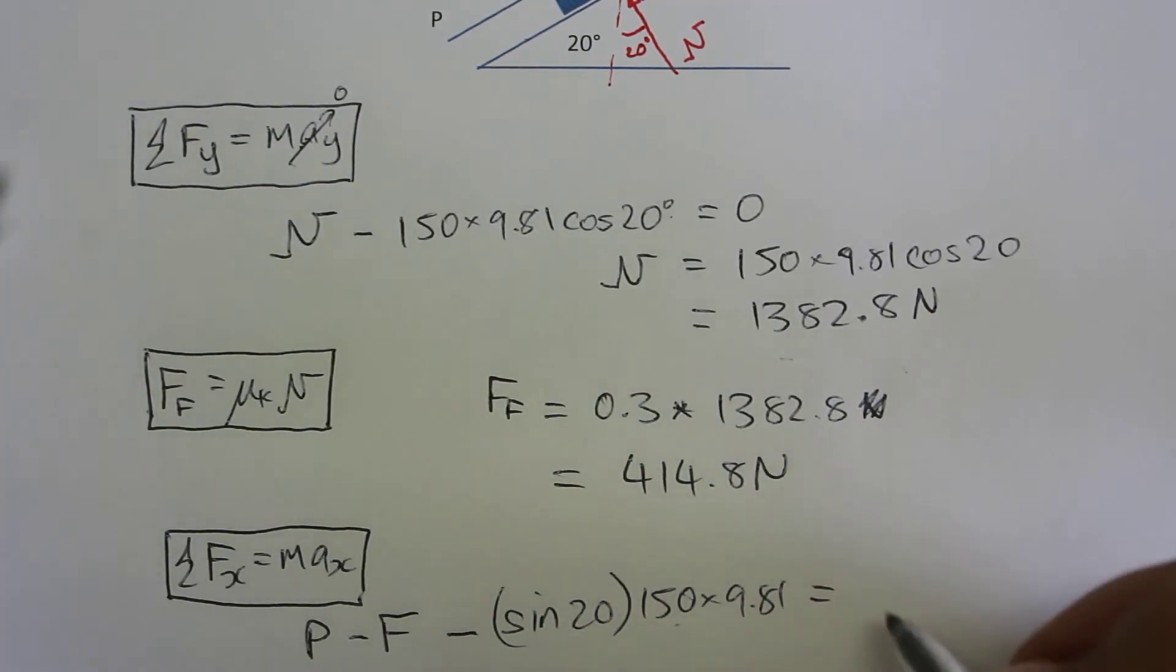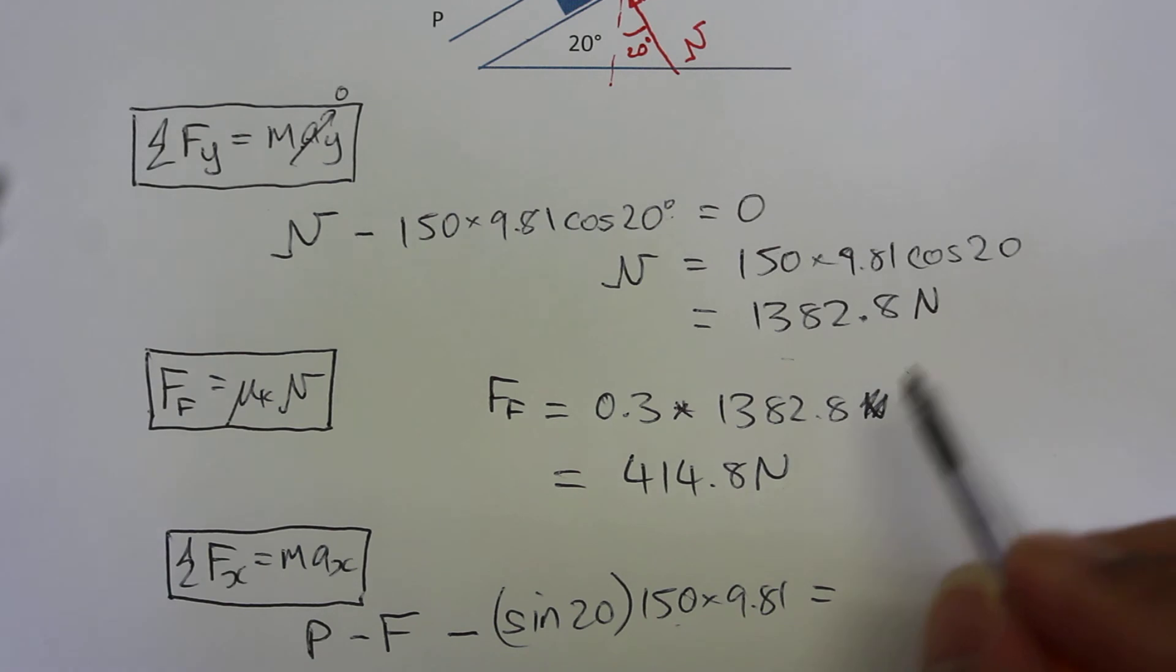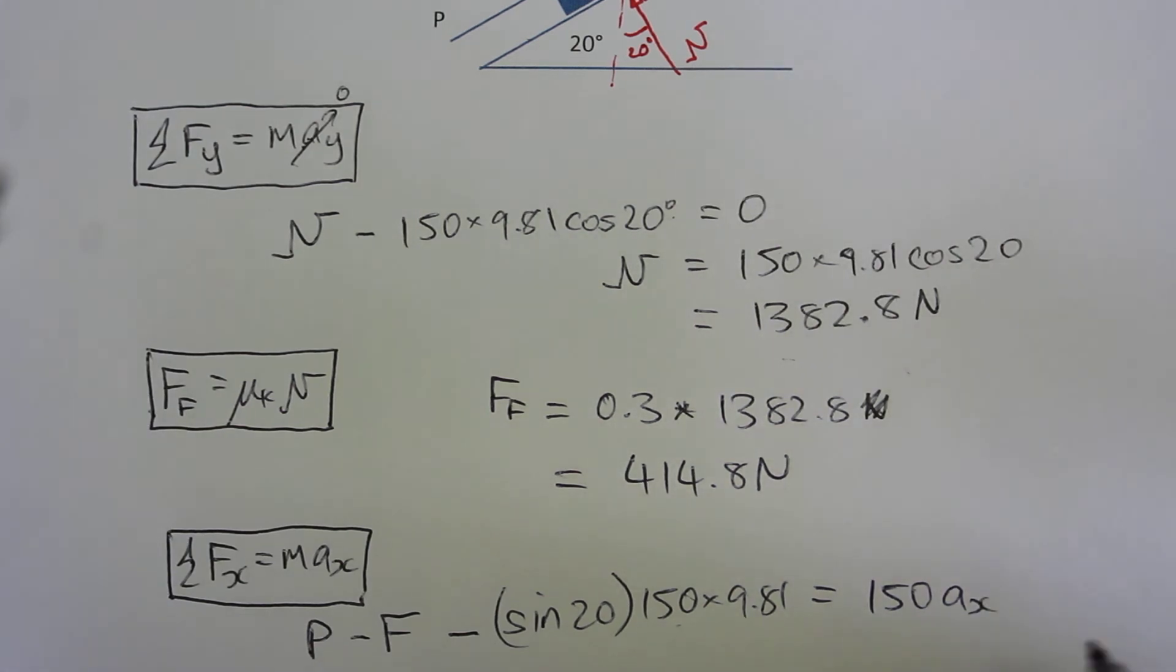And we can then find the x component. So this is equal to mass times acceleration in the x direction. So the mass was 150 kilograms in the question, and A x is what we're trying to find. So what A x is actually given to us. So that was equal to 2.5.